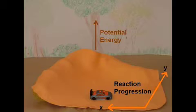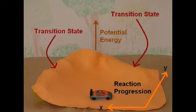We can model the amount of energy in the reaction using a potential energy surface diagram like this one. The elevation of the hills shows increasing energy, while the x and y directions represent the progression of the reaction. The top of the hills are where the transition state will occur.